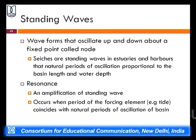Another type of wave is the standing wave, which oscillates up and down around a fixed point called a node — similar to what is observed at the seaside. Seiches are the best example of this kind of standing wave. Another important concept is resonance, which is the amplification of a standing wave. Resonance occurs when the period of a forcing element, such as a tide or tsunami, coincides with the natural period of oscillation of the water body. If it coincides, resonance of the wave can occur. That covers the wave conditions.